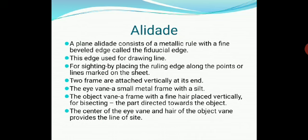The fine beveled edges of the alidade are used for drawing lines on the sheet. There are two frames attached vertically at the ends. The eye vane is a small metal frame having a slit from which we can sight the stations. The object vane is a frame consisting of fine hairs placed vertically for bisection. The center of the eye vane and the hair of the object vane together provide the line of sight.